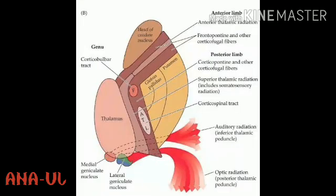The internal capsule consists of: the anterior limb, which lies between the caudate nucleus medially and the anterior part of the lentiform nucleus laterally; the posterior limb, which lies between the thalamus medially and the posterior part of the lentiform nucleus laterally; and the genu, located where both limbs meet. In addition, some fibers lie behind the posterior end of the lentiform nucleus, constituting the retrolentiform part, while other fibers pass below the lentiform nucleus, constituting the sublentiform part.